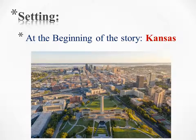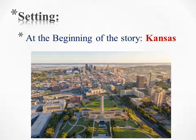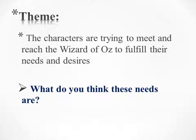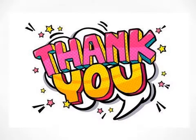The setting in the story is the time and place where the events take place. The setting keeps changing as we read. First, the story begins in Kansas in America. Then we move on to the land of the Munchkin until we reach the city of Emeralds. The theme is about the characters trying to meet and reach the Wizard of Oz to fulfill their needs and desires. What do you think these needs are? We'll find out as we read. Thank you.